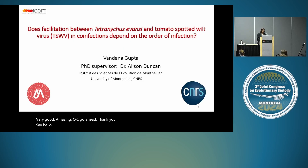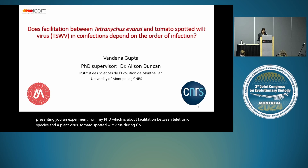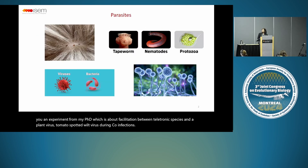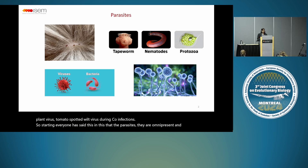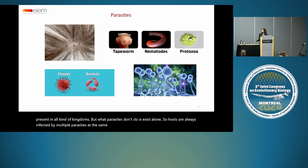Hello everyone, I'm Vandana. I am from ESEM, University of Montpellier. Today I'll be presenting an experiment from my PhD, which is about facilitation between Tetranychus species and a plant virus — tomato spotted wilt virus — during co-infections. Parasites are omnipresent across all kingdoms, but what parasites don't do is exist alone. Hosts are always infected by multiple parasites at the same time, which are called co-infections, and during co-infections, parasites can interact with each other positively, negatively, or not at all.